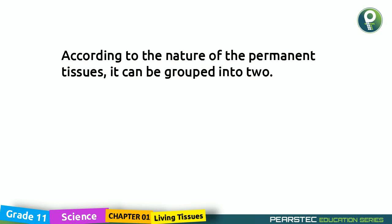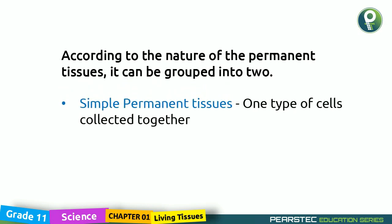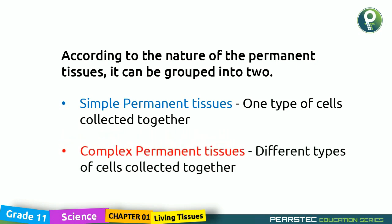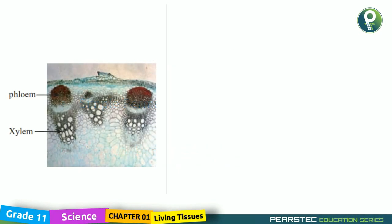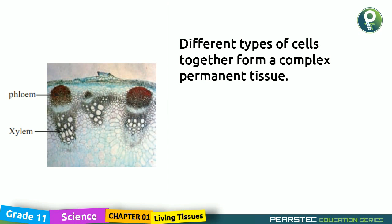According to the nature of the permanent tissues, it can be grouped into two. Simple permanent tissue has only one type of cells collected together. The complex permanent tissue is the next one - complex permanent tissue has different types of cells collected together. So we have a clear difference between the simple permanent tissue and complex permanent tissues.